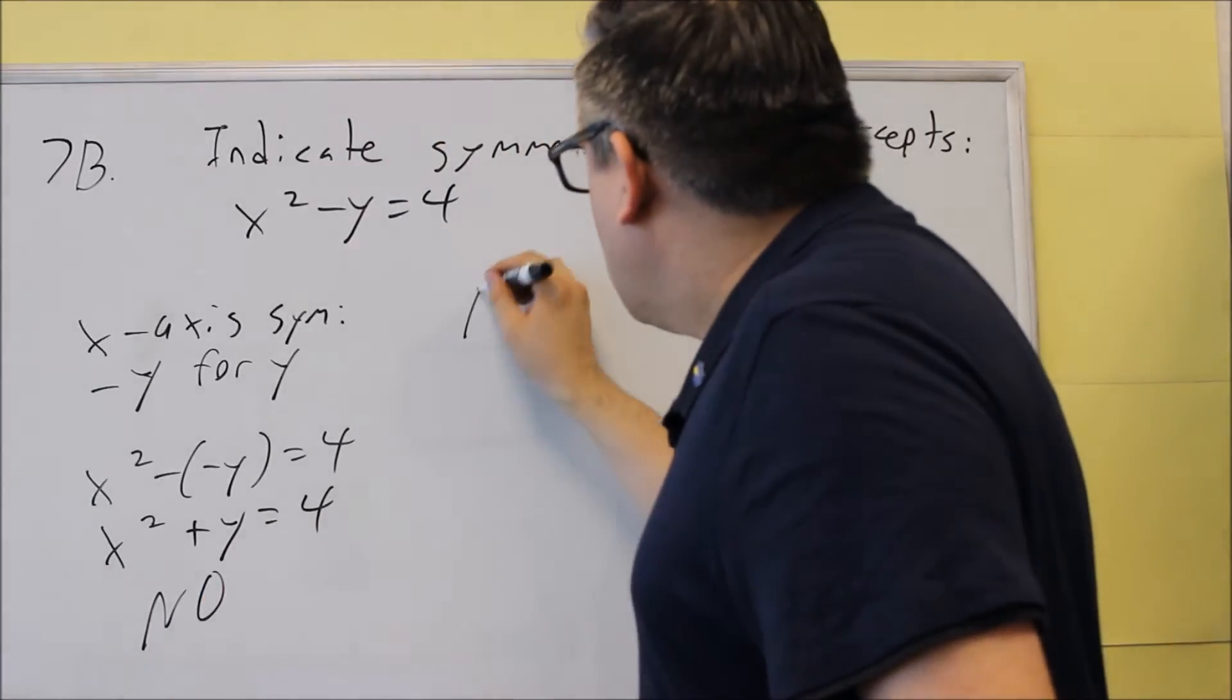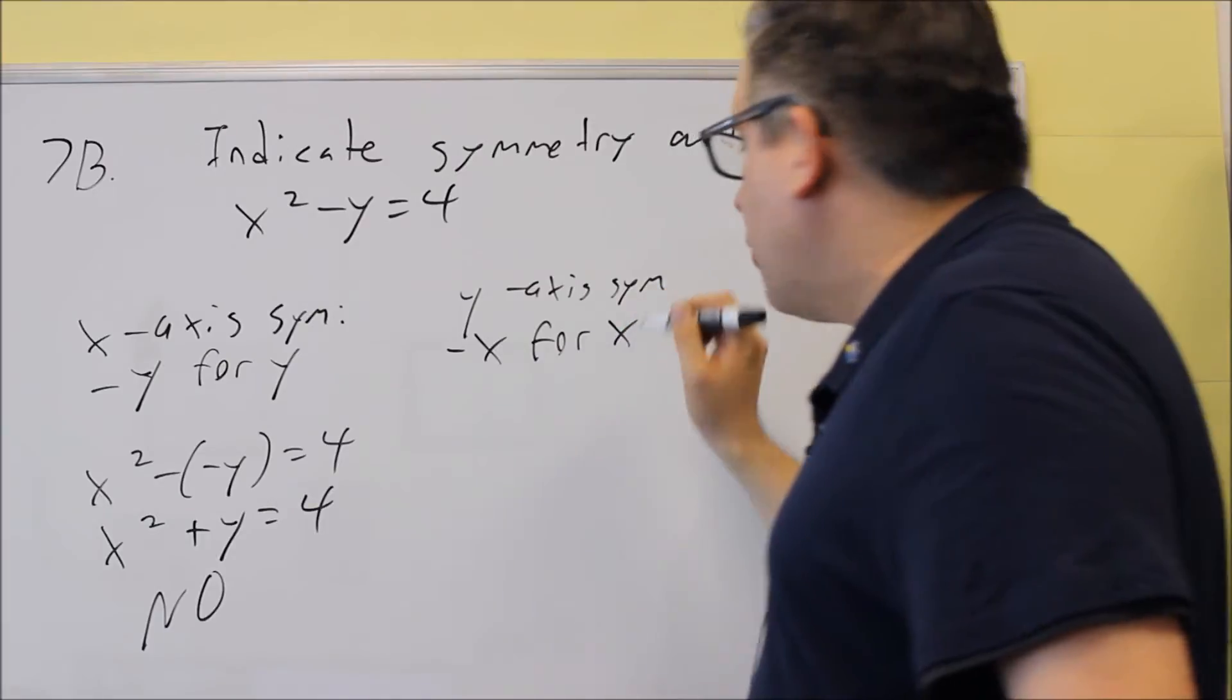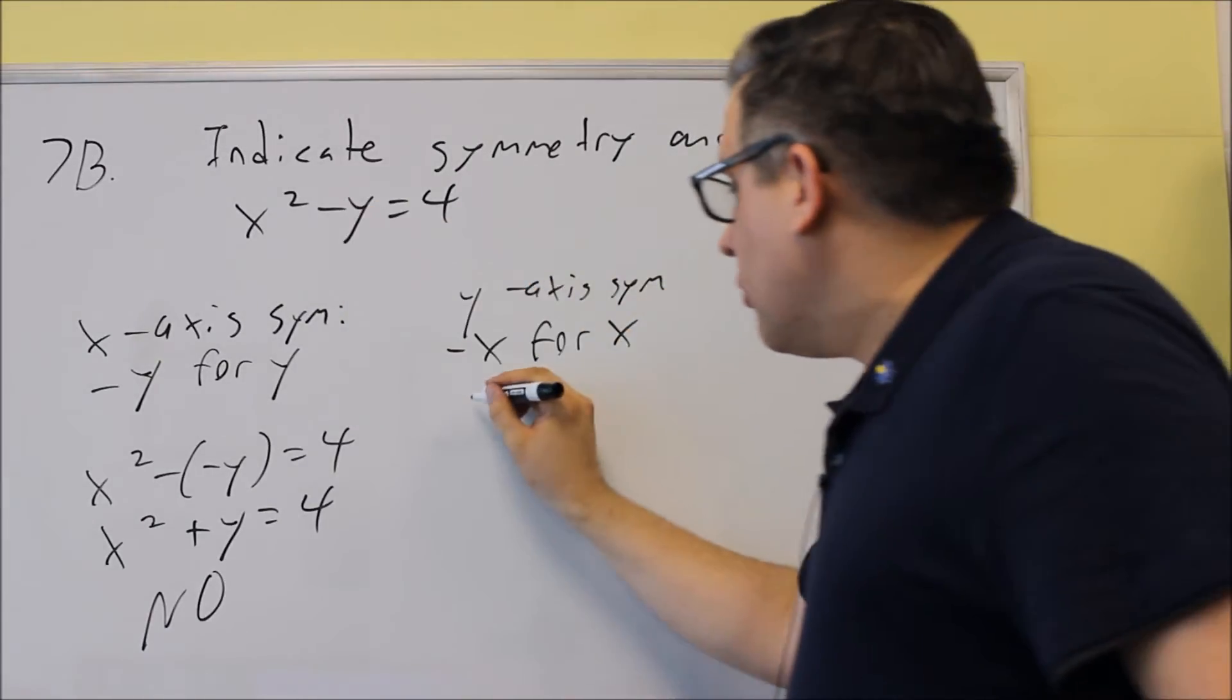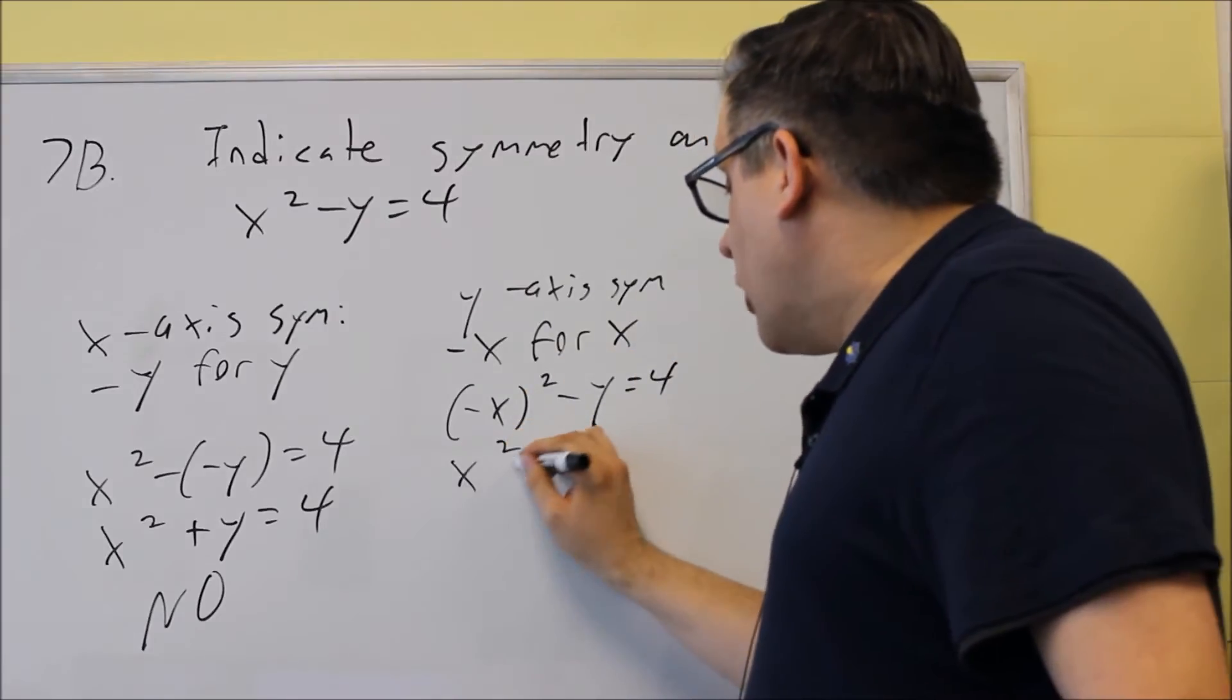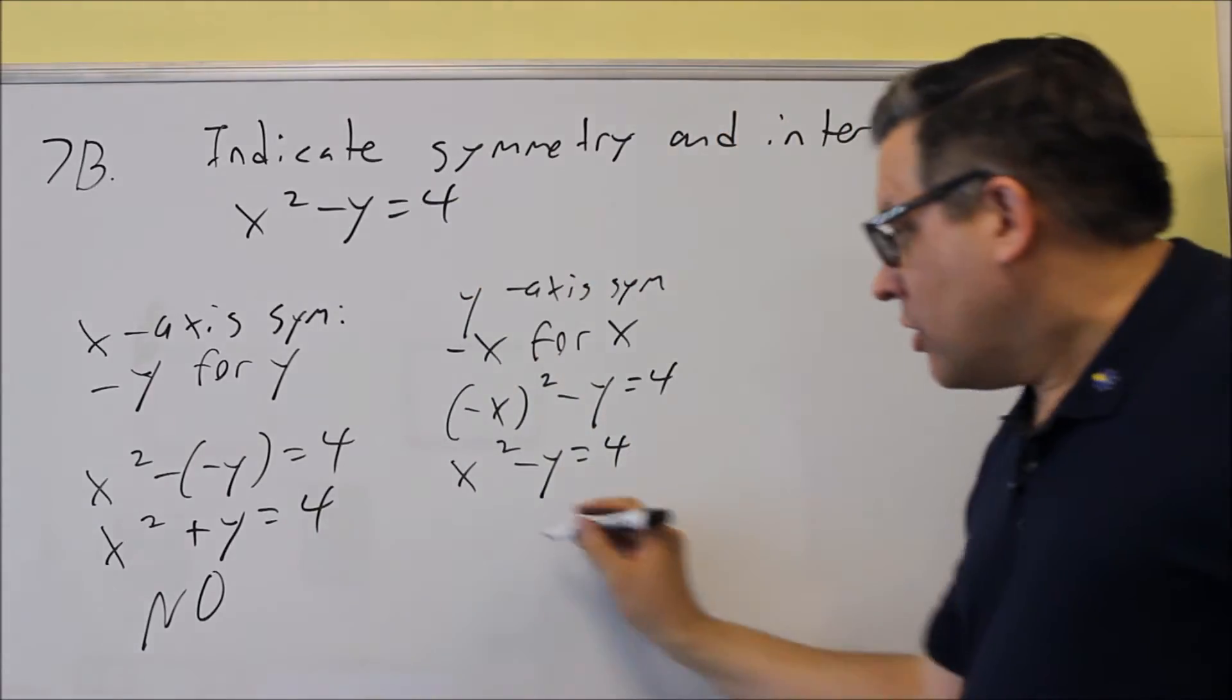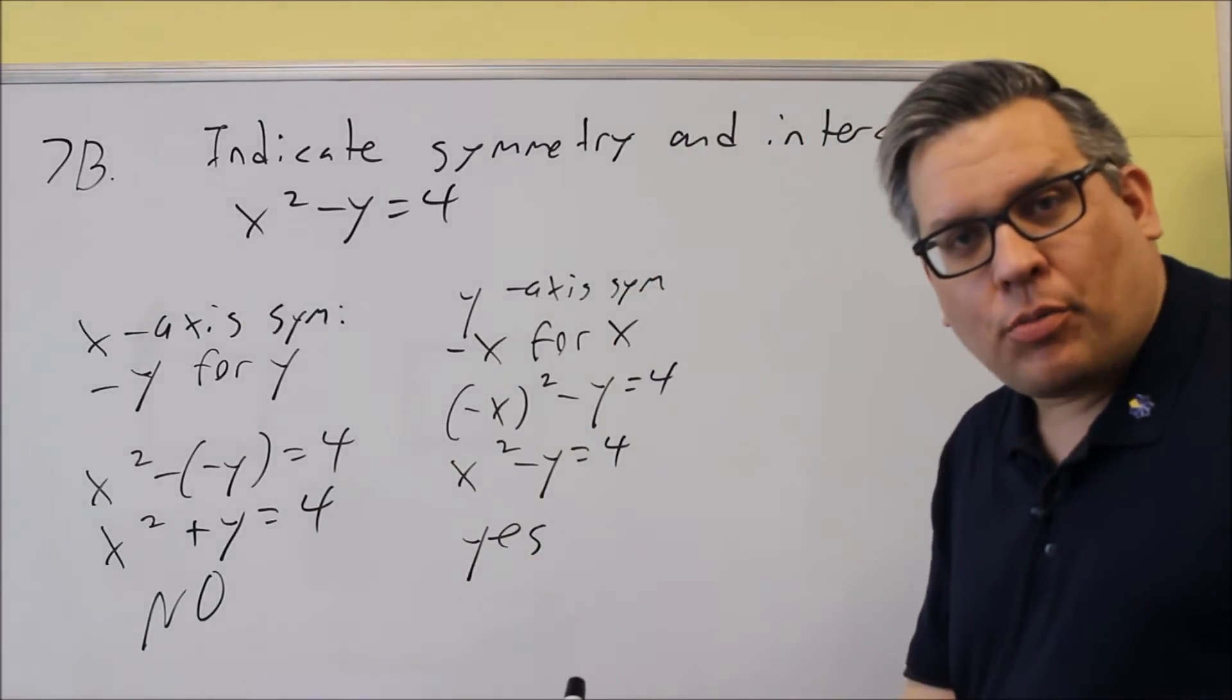Next, let's look at y-axis symmetry. We're going to put negative x in place of x. So let's look at that one, we're going to do negative x squared minus y equals 4, and we get x² minus y equals 4. That's exactly the same as the original one. So now we know it does have y-axis symmetry, so we can put that down in our blank.